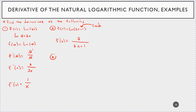Let's try f(x) = ln(4x² + x). So f prime of x: take the derivative of the inside — bring the 2 down, this becomes 8x, plus the derivative of x which is 1 — divided by the inside, which is 4x² + x. Derivative of the inside divided by the inside. Always remember that.